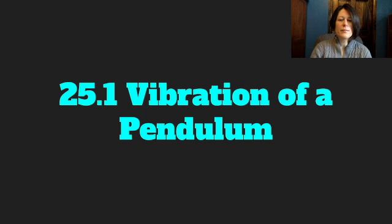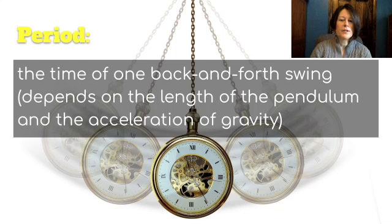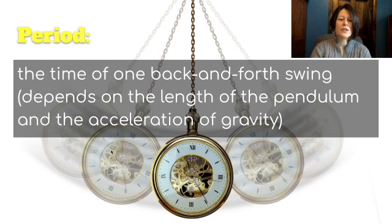Let's talk about the vibration of a pendulum — you've probably never thought of a pendulum as vibrating. Here you see a pendulum, like a watch going back and forth. When we talk about a pendulum, we talk about the period: this is the time of one back-and-forth swing, and it depends on the length of the pendulum and the acceleration of gravity. The time it takes to complete one back-and-forth swing is called the period.